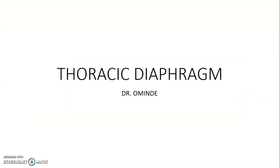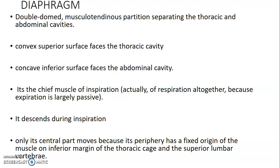The thoracic diaphragm is a muscular tendinous partition that separates the thoracic and abdominal cavities. It is usually convex superiorly towards the thoracic cavity and concave inferiorly towards the abdominal cavity. It's a chief muscle of inspiration — as you breathe in it descends, while during expiration it's a passive participant. The central part of the diaphragm is what moves, forming a dome with convexity towards the thoracic cavity, while the periphery is fixed.